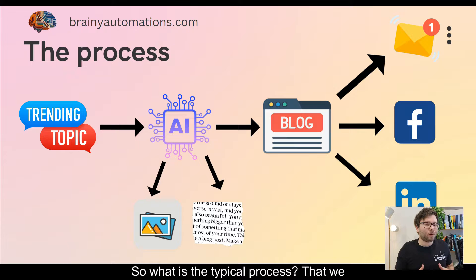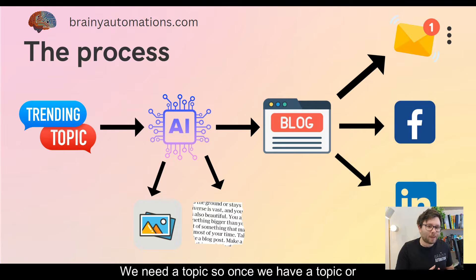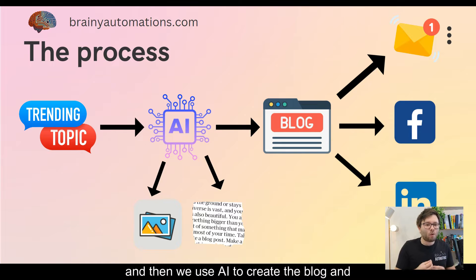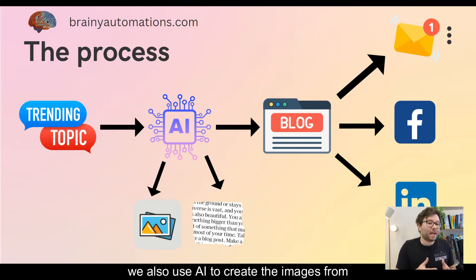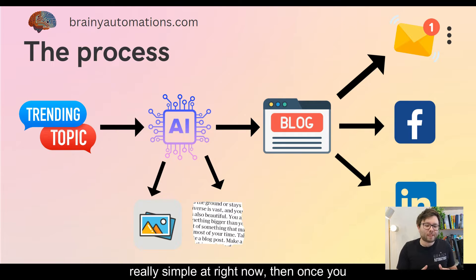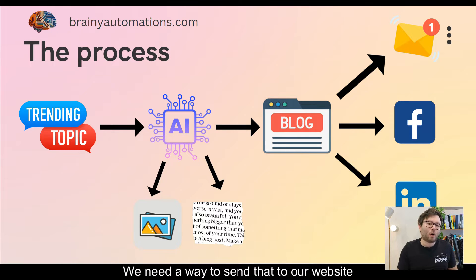So what is the typical process? Well, the first thing that we need is some information — we need a topic. So once we have a topic or a trending topic, we then process that information through AI. We also use AI to create the blog and to create the images for us. There are a multitude of different ways you can do this, but we're going to keep it really simple. Then once you've processed all of that information, we need a way to send that to our website.